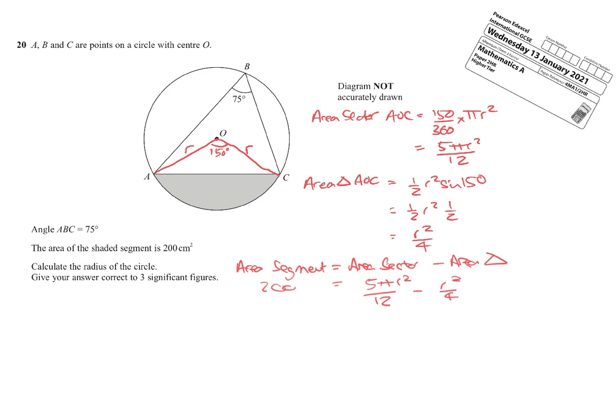Let's tidy up the right-hand side here. So what have we got? We can take the R squared out. That's a common factor, and that's what I'm trying to find. So I've got R² in brackets 5π over 12 minus 1 over 4 equals 200.